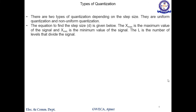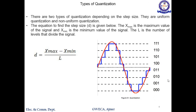There are two types of quantization process: uniform quantization and non-uniform quantization. An important equation to find the step size is: step size = (X_maximum − X_minimum) / L, where X_maximum is the maximum value of the signal, X_minimum is the minimum value of the signal, and L is the number of levels that divide the signal.